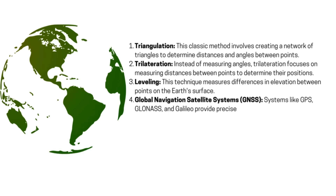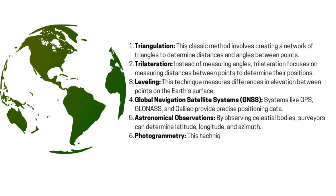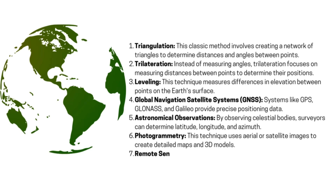5. Astronomical Observations — By observing celestial bodies, surveyors can determine latitude, longitude, and azimuth. 6. Photogrammetry — This technique uses aerial or satellite images to create detailed maps and 3D models. 7. Remote Sensing — This involves collecting data from satellites or aircraft to monitor the Earth's surface.